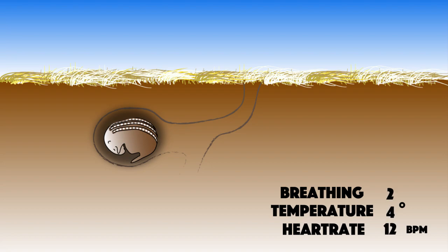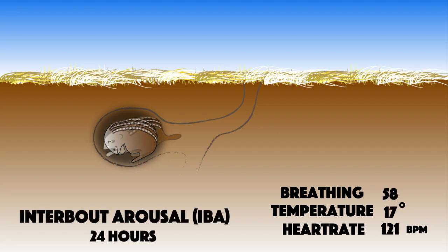Now this state is called torpor, and it lasts for about two weeks. After that, squirrels enter a new state called interbound arousal, or IBA.